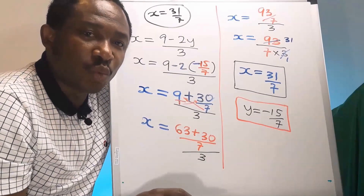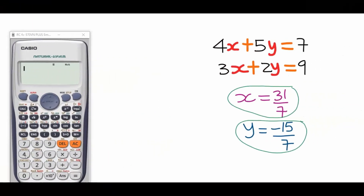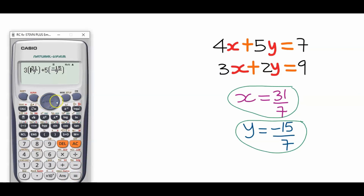So we have x = 31/7 and y = −15/7. To test for accuracy, we substitute into equation 1: 4x + 5y with x = 31/7 and y = −15/7, which should give 7. For equation 2, the coefficient of x is 3 and the coefficient of y is 2, and substituting should give 9.